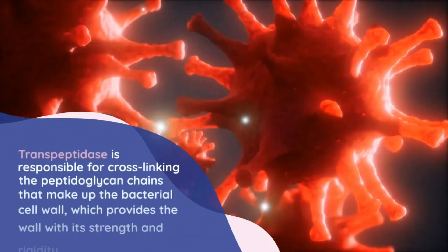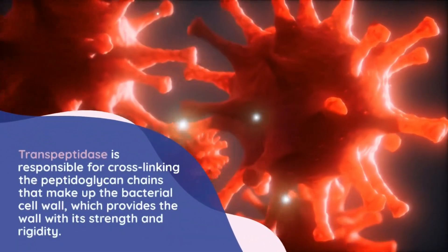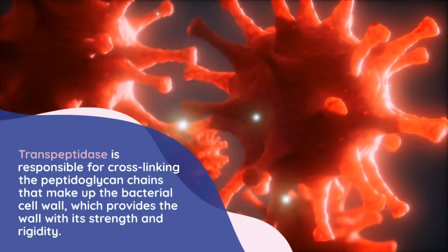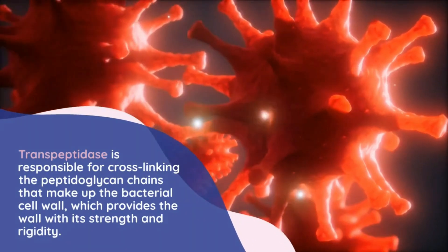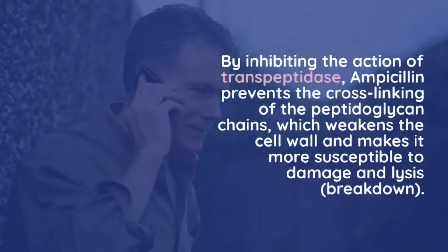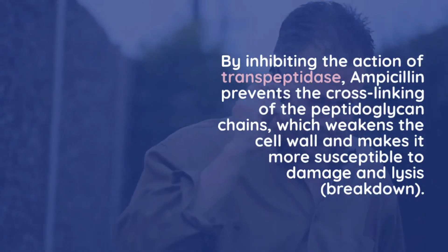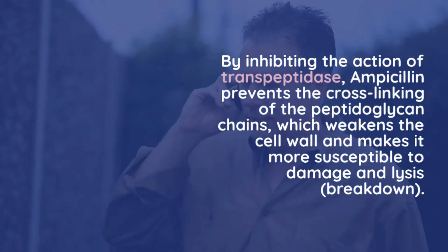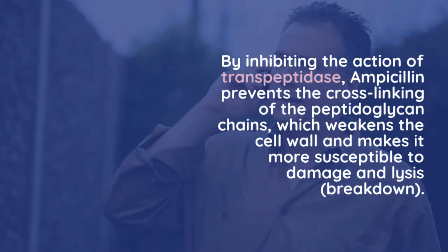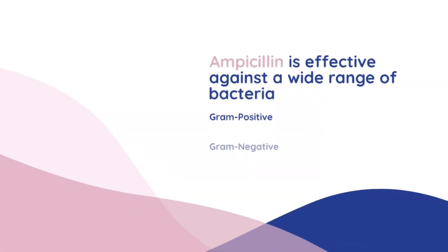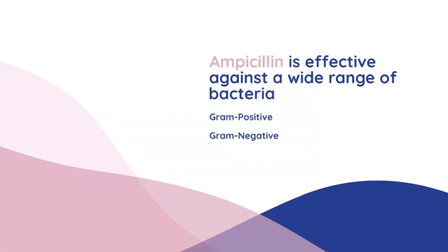Transpeptidase is responsible for cross-linking the peptidoglycan chains that make up the bacterial cell wall, which provides the wall with its strength and rigidity. By inhibiting the action of transpeptidase, ampicillin prevents the cross-linking of the peptidoglycan chains, which weakens the cell wall and makes it more susceptible to damage and lysis.